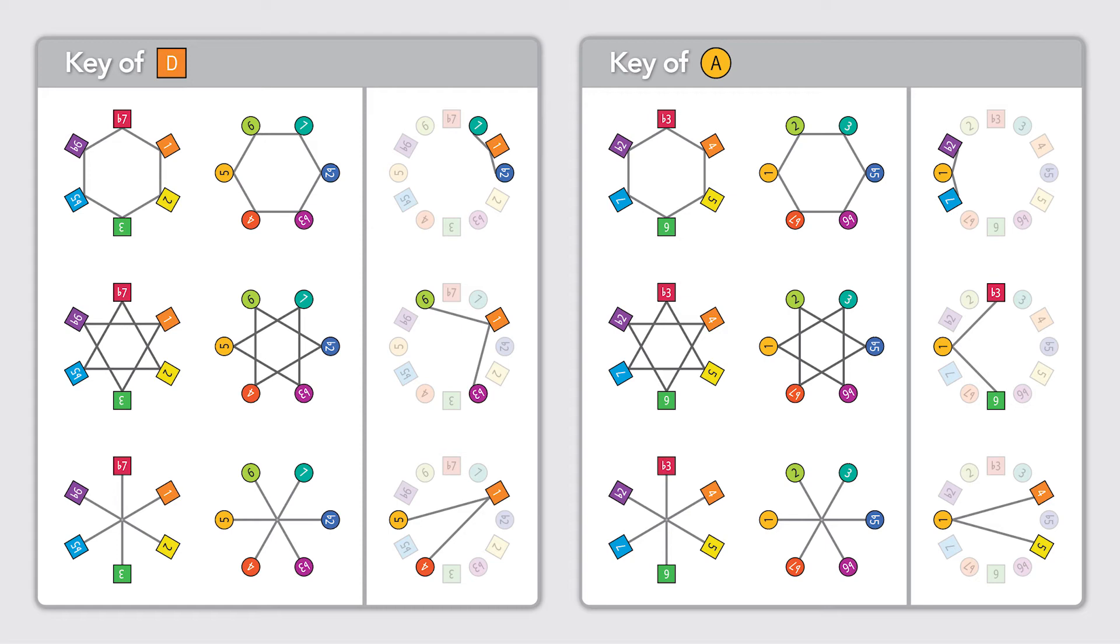And when you move again, say, to the key of A, where the circle, orange-yellow, A, is now 1, again, the scale degrees shift, but the underlying intervals remain the same.